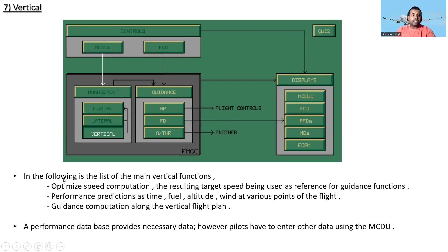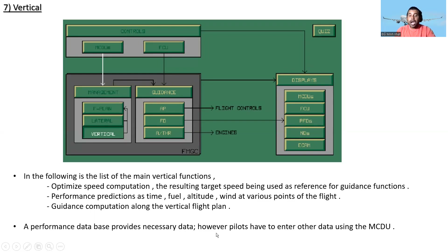For the vertical functions, these include optimized speed computation, with the resulting target speed used as a reference for guidance functions, performance predictions such as time, fuel, altitude, and wind at various points of the flight, and guidance computations along the vertical flight plan. A performance database provides necessary data; however, pilots have to enter other data using the MCDU.